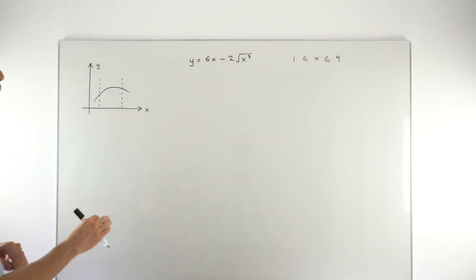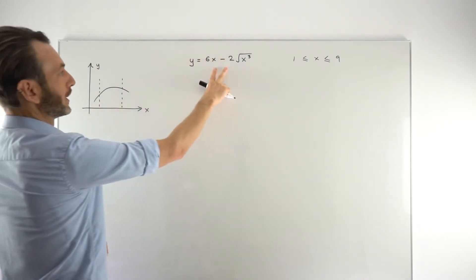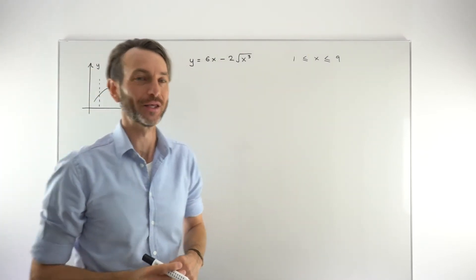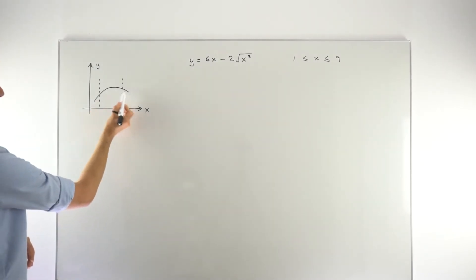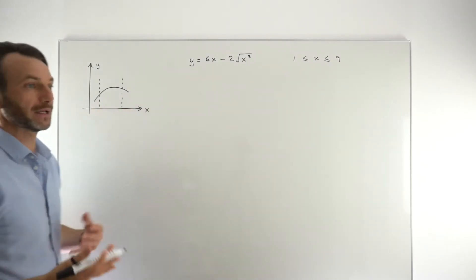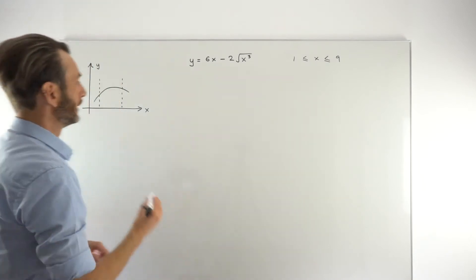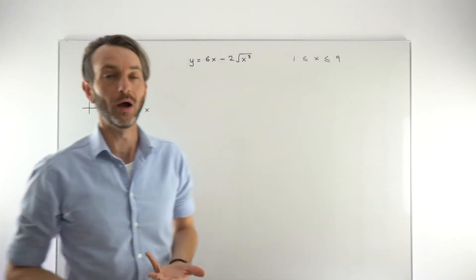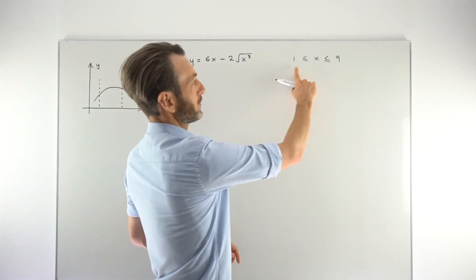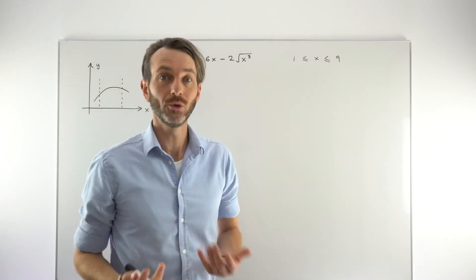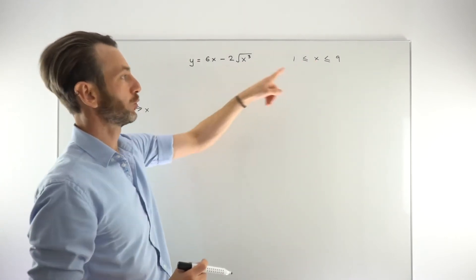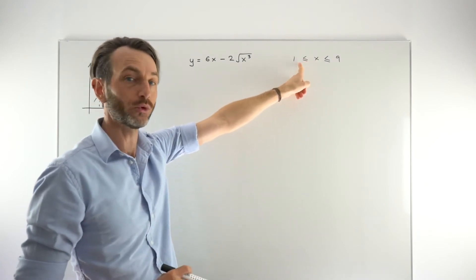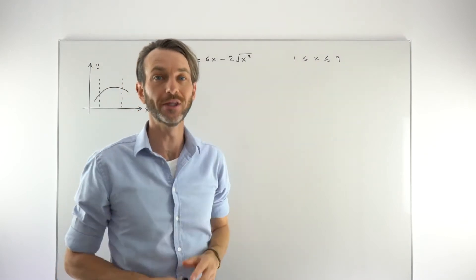Let's start by looking at a made-up example. I've drawn a curve here — some made-up graph of a function — with construction lines to represent the closed interval. What is a closed interval? A closed interval is basically a range of values which includes the endpoints. So in our actual problem, x is between 1 and 9, and it's x greater than or equal to 1 and less than or equal to 9, so it includes the endpoints.